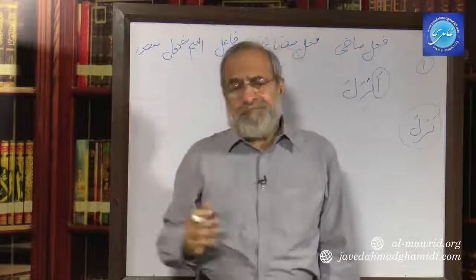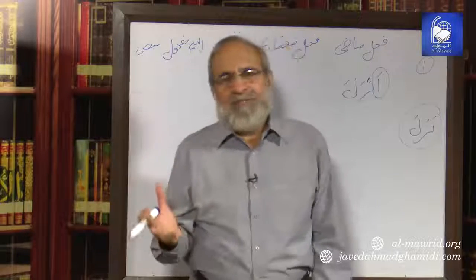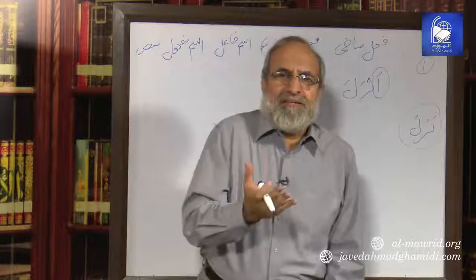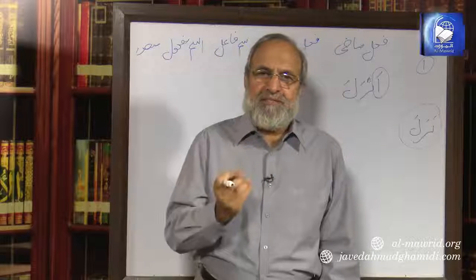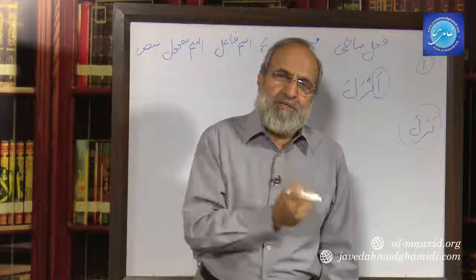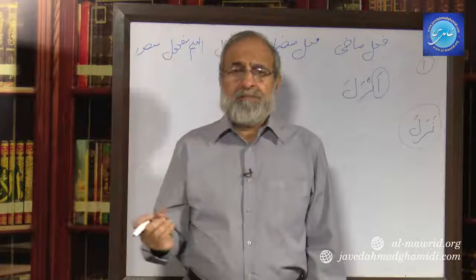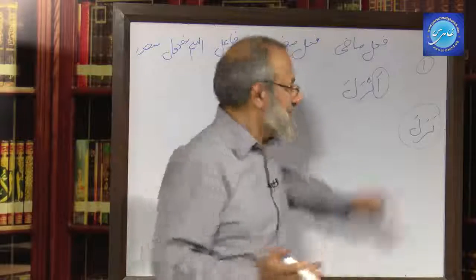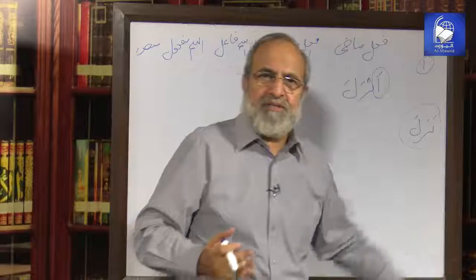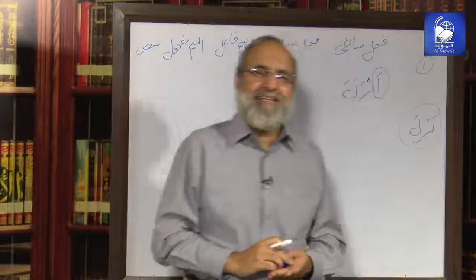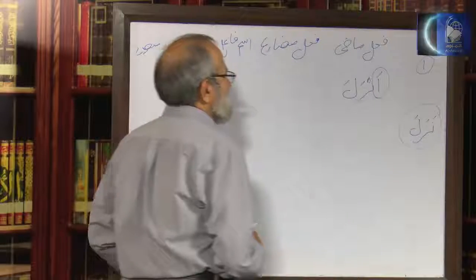The 14 boxes are filled like this. Anzala is similar to Zaraba, Qatala, Samaa, but it has an additional Alif. That is Anzala as the Fail Mazi. The Fail Mudare is Yunzilu. This is very interesting: the Fail Mudare of Anzala is Yunzilu. If I write Zaraba alongside Yadribu, you can see that Anzala differs from Zaraba in having one additional letter, Alif. But compare Yunzilu with Yadribu — there's no difference in appearance.